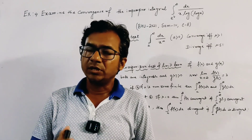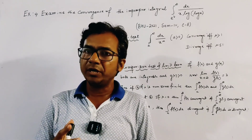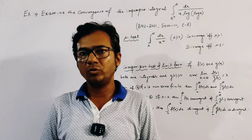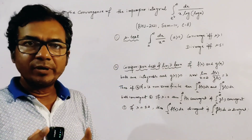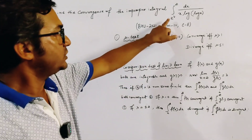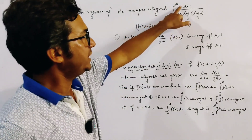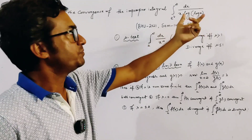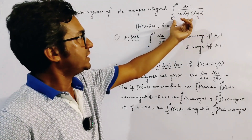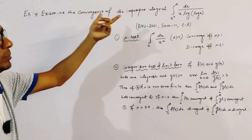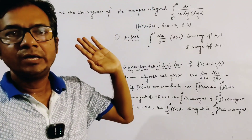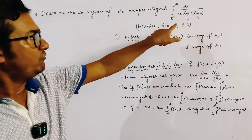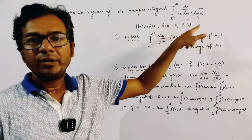We discuss the convergence of an important problem of improper integration. The improper integration is the integral from e-squared to infinity of dx divided by x times log of log x. We have to check the convergence of this improper integration. This is from University of Baccarat 2021, 4th semester, paper C8.